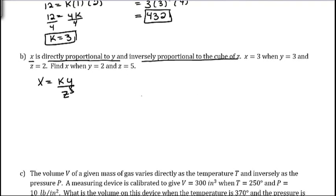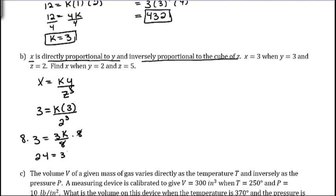We're going to use the next information to figure out what K is. X is 3, Y is also 3, and Z is 2, so that's 2 cubed in the denominator. So we have 3 equals 3K divided by 8. Multiply both sides by 8, giving us 24 equals 3K, then divide by 3. We get K equals 8. That gives us the equation X equals 8Y divided by Z cubed.